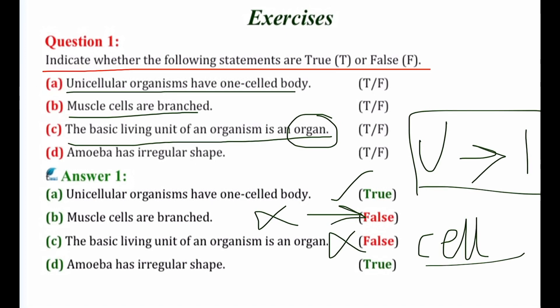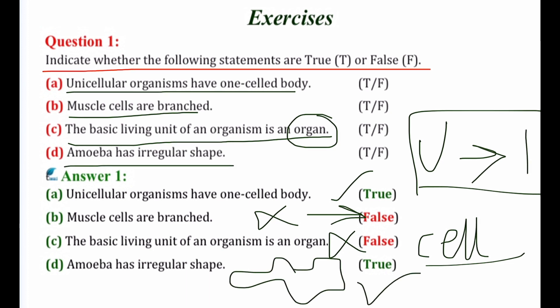Statement D: Amoeba has an irregular shape. The given statement is correct because the shape of the amoeba appears to be irregular — unlike other organisms, it does not have a definite shape.